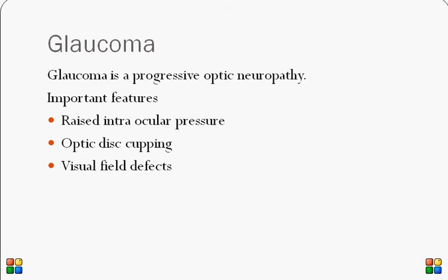Most patients are not aware of what glaucoma is and what the risks are. Glaucoma is a progressive optic neuropathy — there is a progressive decrease in optic nerve function. The major risk factor for this progression is increased intraocular pressure. There is also something called normal tension glaucoma, but we'll focus on the basics for now.